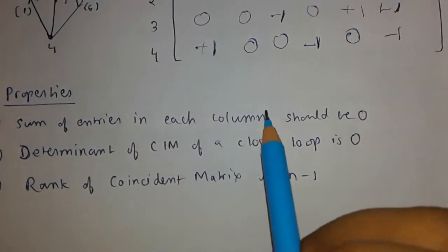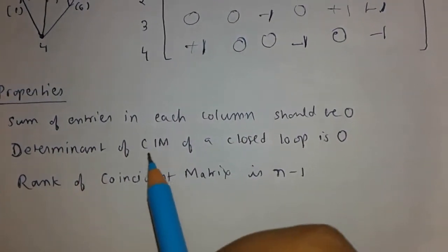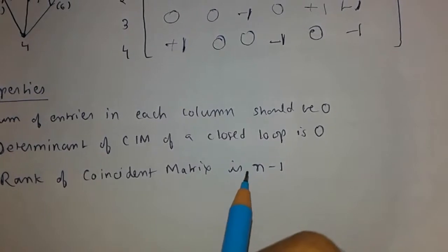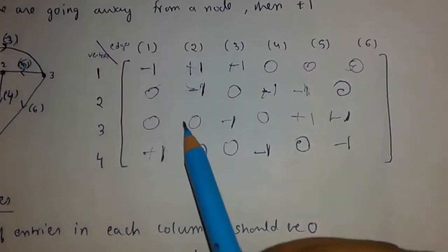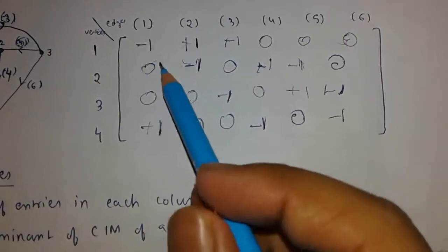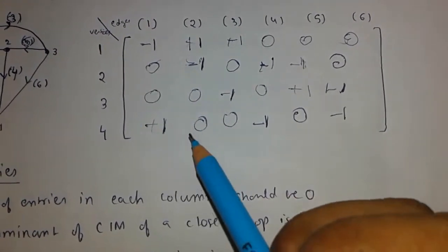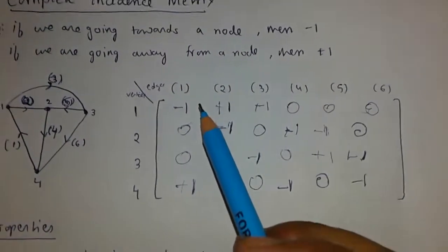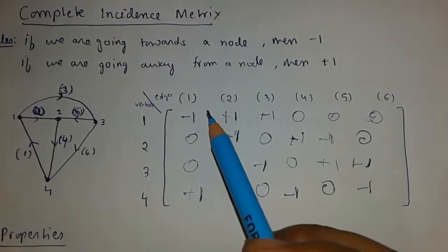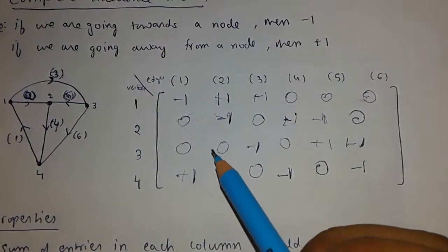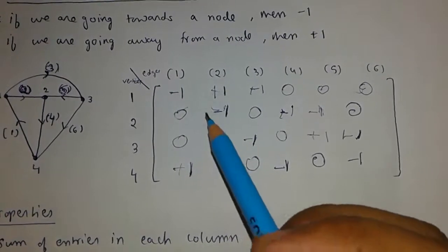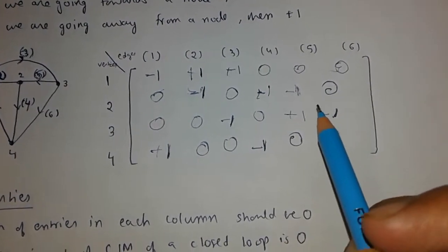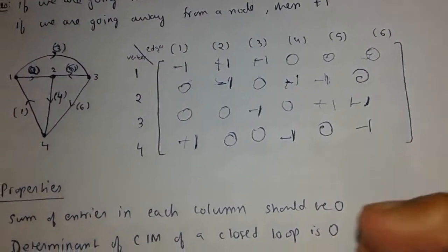There are some properties: the sum of entries in each column should be zero. The determinant of the complete incidence matrix of a closed loop is zero. The rank of the incidence matrix is n minus one, where n is the number of vertices. As you can see, the sum of all the elements in a column will be zero — this is a special feature of the complete incidence matrix. If you are not getting zero when adding all the elements in a column, your matrix is not correct. For example, minus one plus one equals zero here.